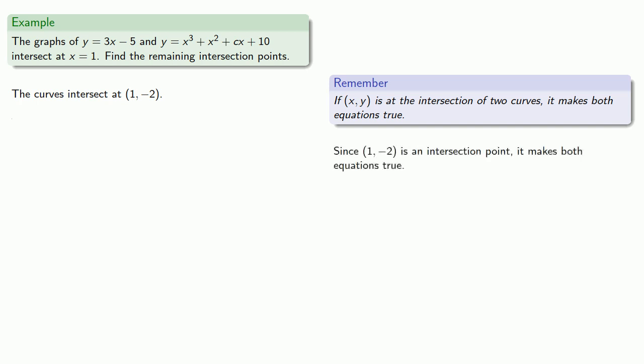Now since (1, negative 2) is an intersection point, it makes both equations true. So we have y equals x cubed plus x squared plus cx plus 10. Equals means replaceable, so we can replace x with 1 and y with negative 2.